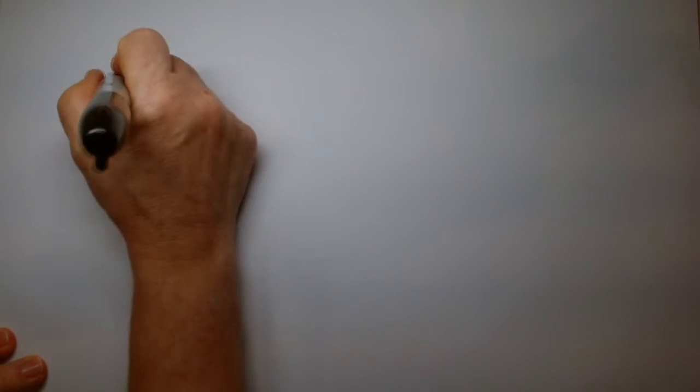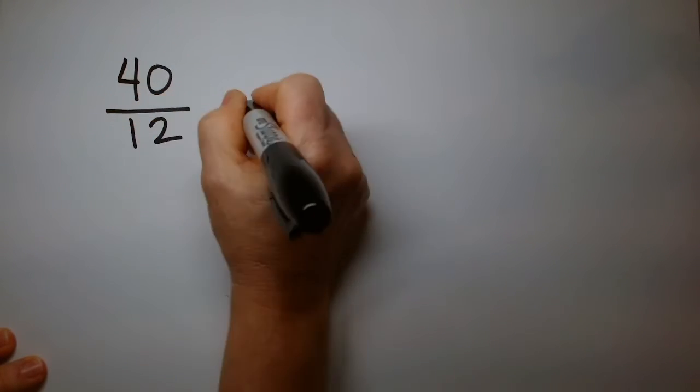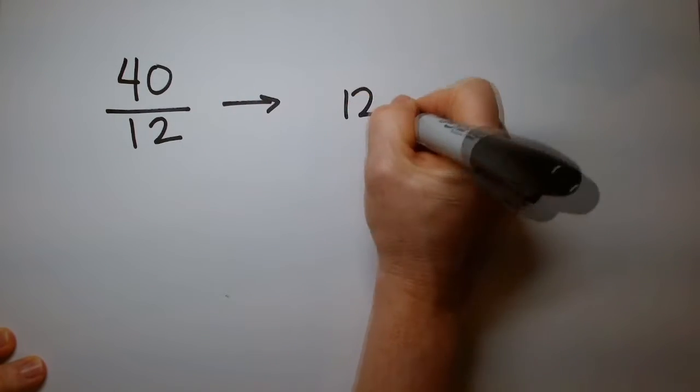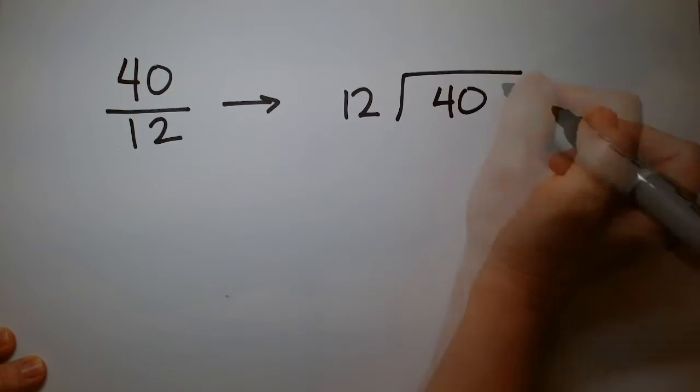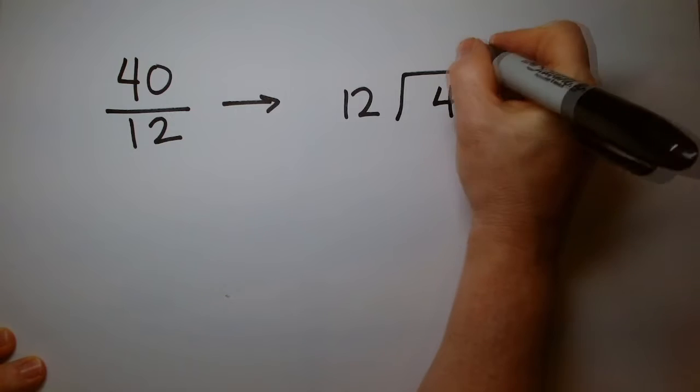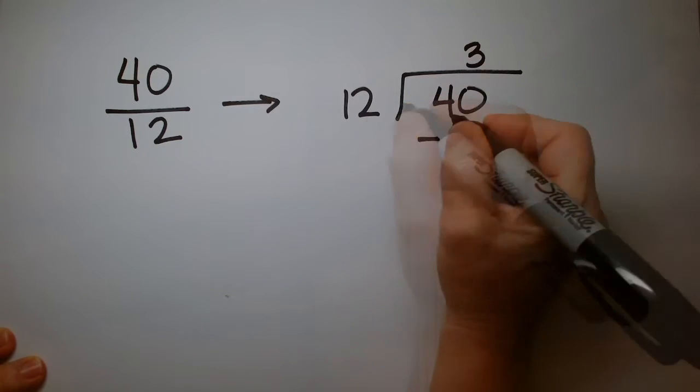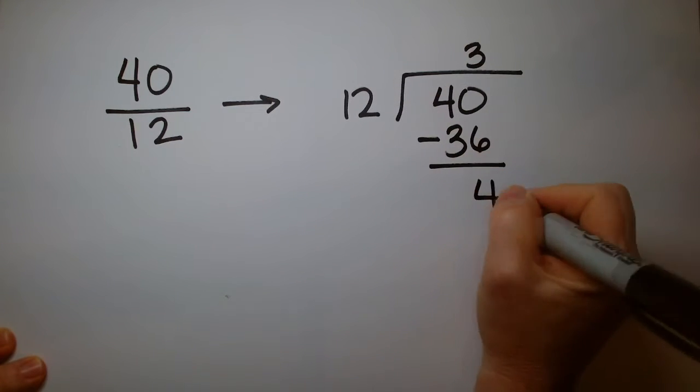We'll rewrite our division problem. It's going to be 40 over 12, which looks like 12 on the outside, 40 on the inside. 12 goes into 40 three times. 3 times 12 is 36. The difference is 4.